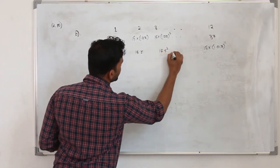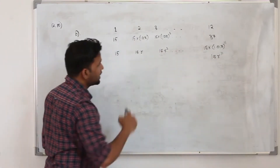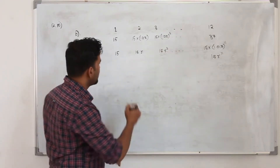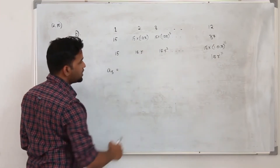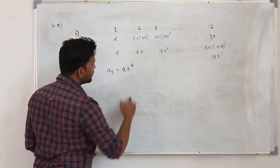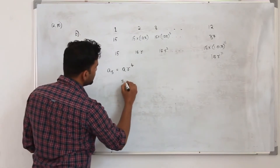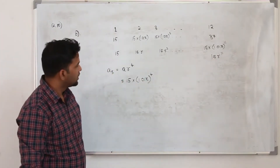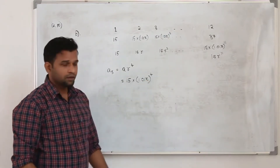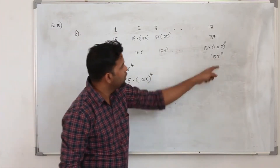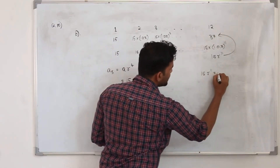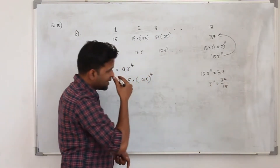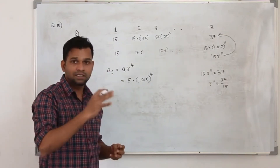The sequence can be rewritten as 15, 15r, 15r², and the last term is 15r to the power 11, which equals 37. So r to the power 11 equals 37 divided by 15. From that we find r, then substitute into the 5th term formula: A times r to the power 4, to get the distance covered in week 5.